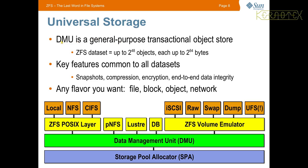Universal storage: the data management unit is a general-purpose transactional object store — basically a database. A ZFS dataset is the Sun way of calling a file system — it's what the equivalent of a file system is. The numbers are astronomical: up to 2 to the 48 objects, and each of those single objects can be 2 to the 64 bytes. That's an immense amount of information.